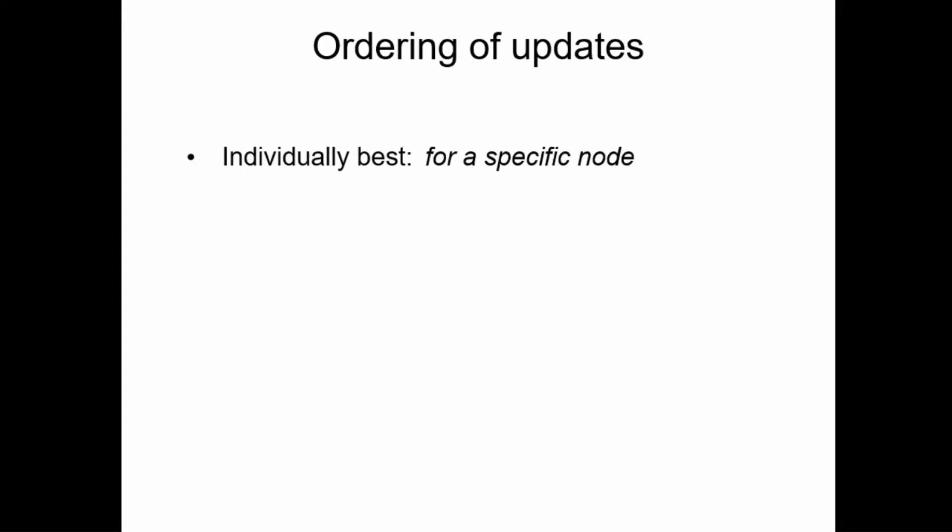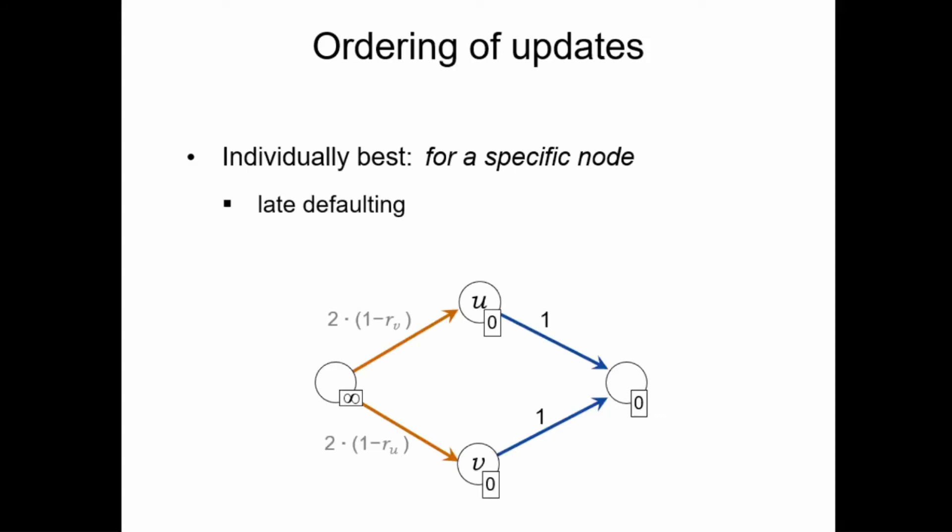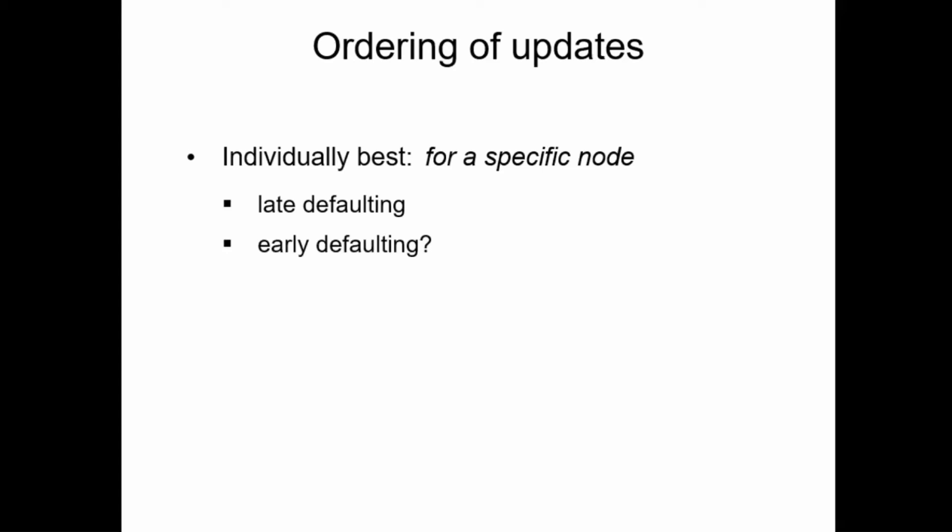Another possible approach is to look at it from the perspective of a single bank, and to see if this bank can achieve a better outcome for itself by making an update at a specific time. In our first example, we have already seen that this can be the case with late defaulting: U and V were both motivated to delay their default announcement for as long as possible, because if the other node reports a default earlier, then they can avoid the default entirely. So as you might expect, delaying your default announcement can be a good strategy in some cases.